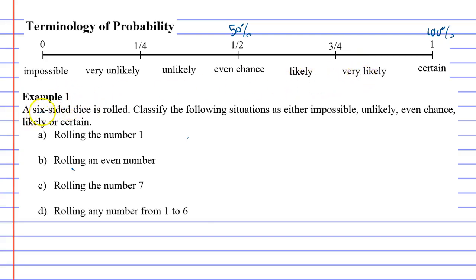A six-sided dice is rolled. Classify the following situations as either impossible, unlikely, even chance, likely, or certain. If I roll the number 1, it's definitely not impossible, but I've got less than an even chance of it happening. There's only one number 1 out of six of them, so I'll say unlikely.